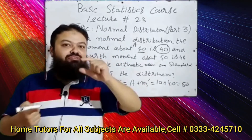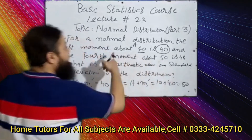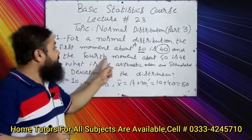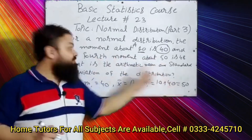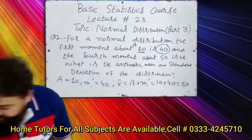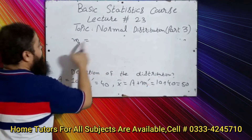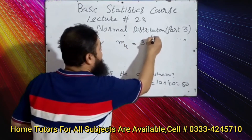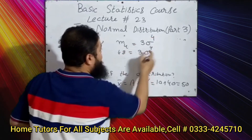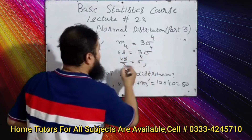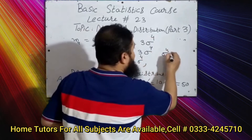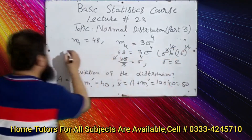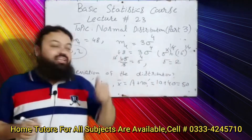We have calculated the mean. Now the second target is the standard deviation. The fourth moment about 50 is 48 — and 50 is the mean — so the fourth moment about the mean is m4 = 48. In the normal distribution, m4 = 3σ⁴. So 48 = 3σ⁴, giving σ⁴ = 16. Taking the fourth root, σ = 2. The correct option is mean = 50 and standard deviation = 2.